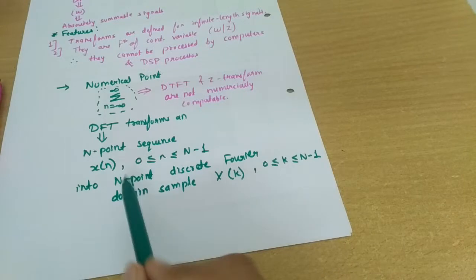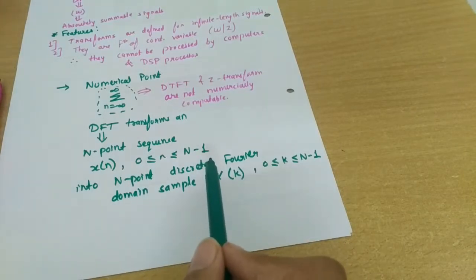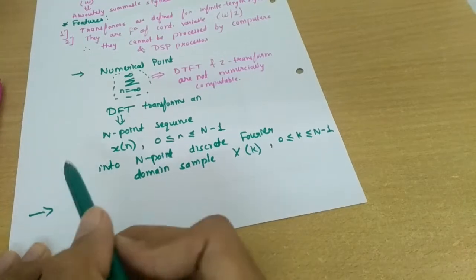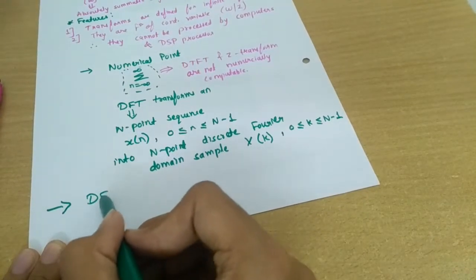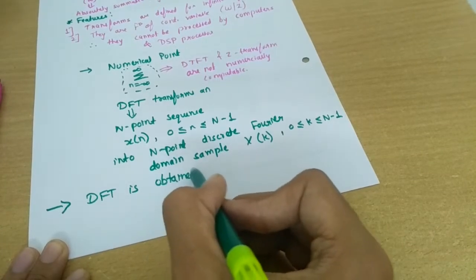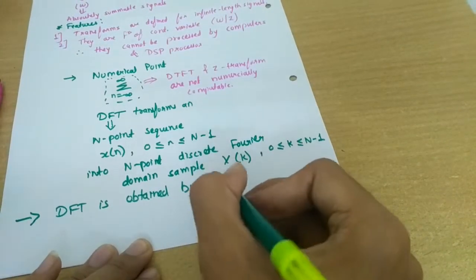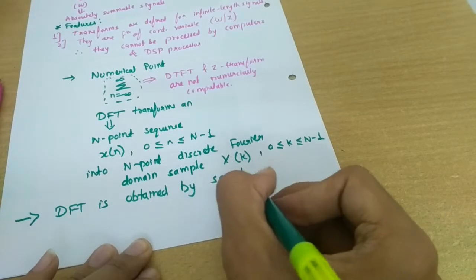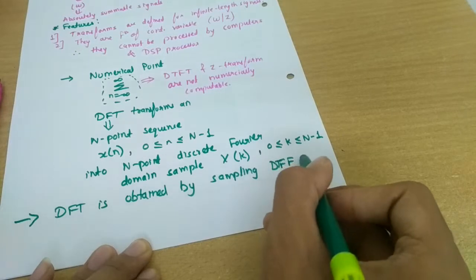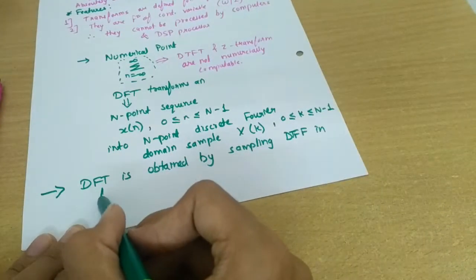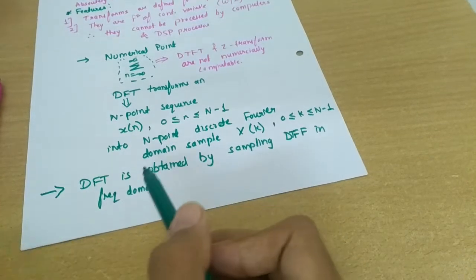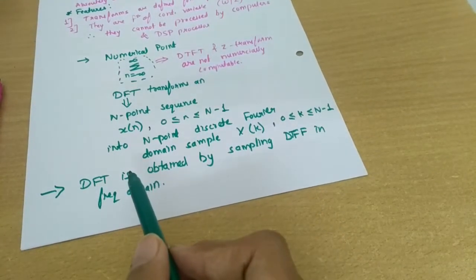So how it is obtained? So we will deal with the derivation of this DFT - that is, how it is obtained. So DFT is obtained by sampling DTFT, and you know DTFT very well.